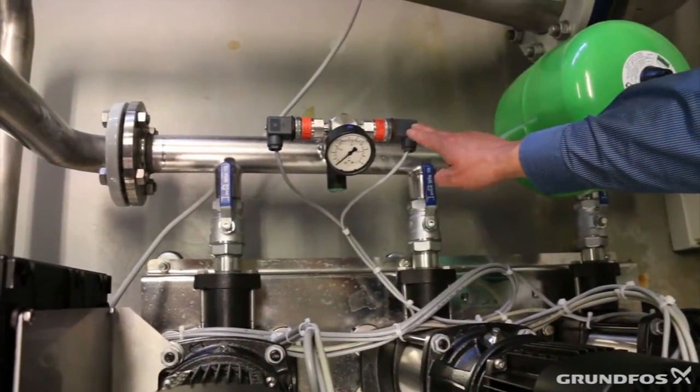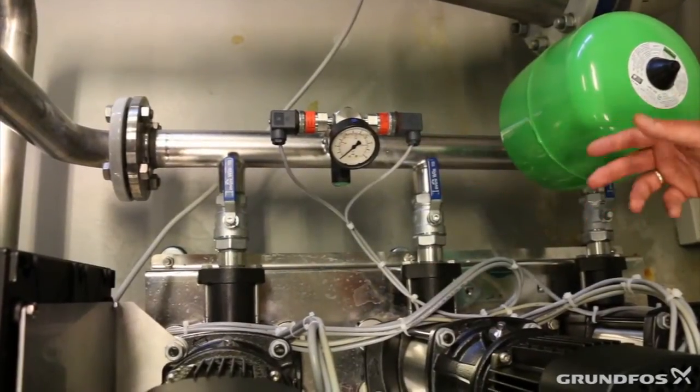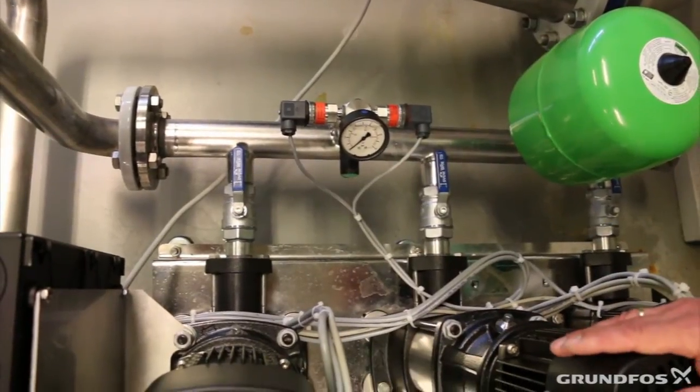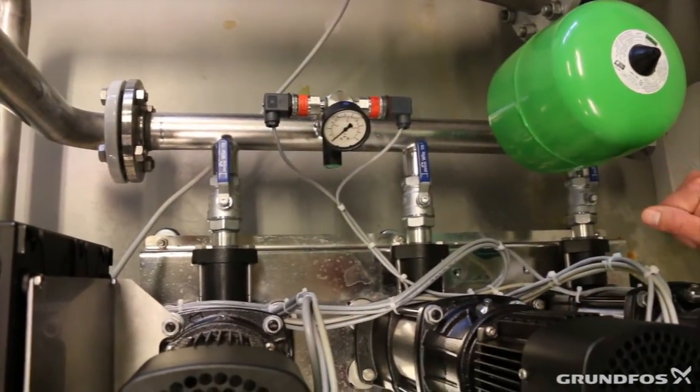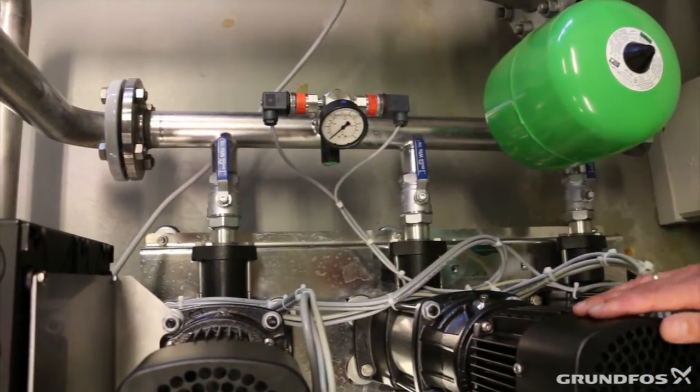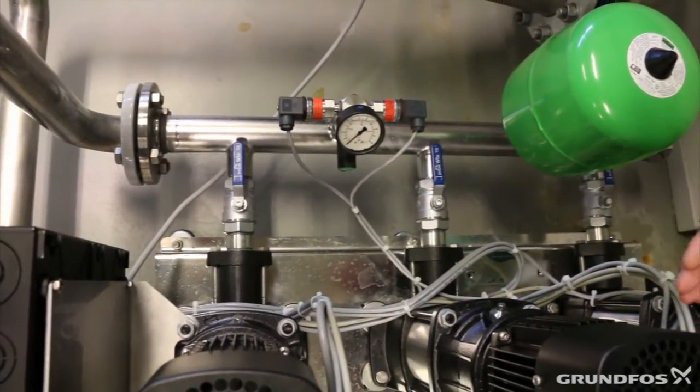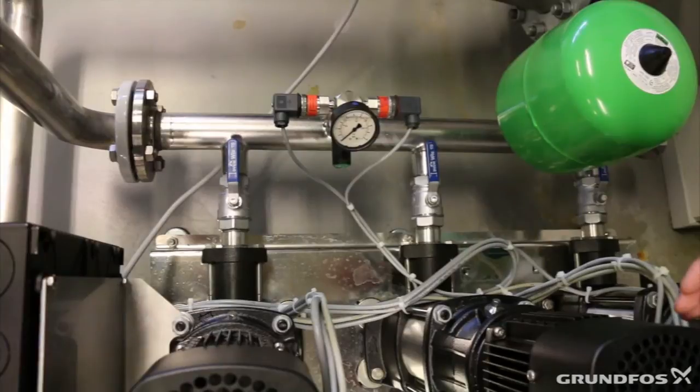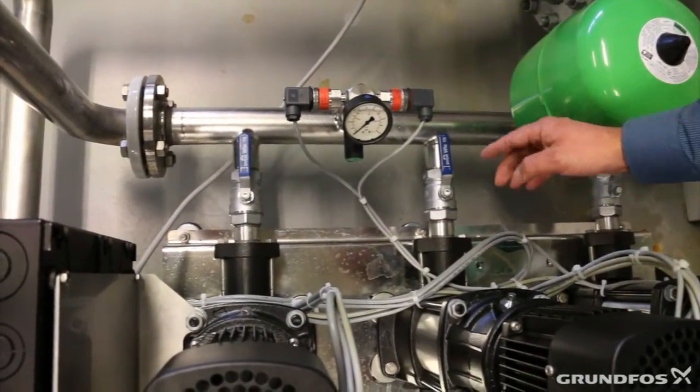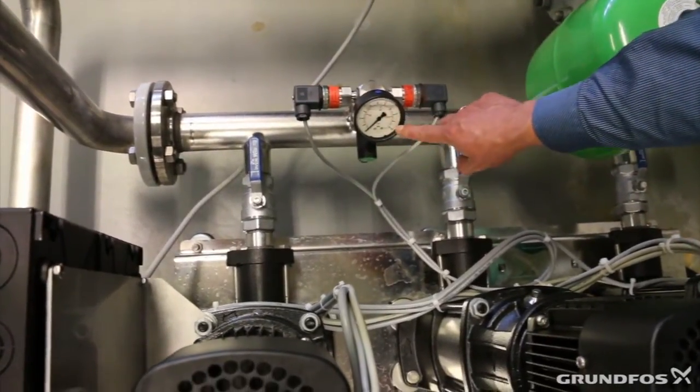What we also see here is two pressure sensors. These are used to transmit the actual pressure that we have to the pumps and the pumps will compare the measured pressure with the set point that we have. Depending on the difference, the pumps will go up in speed if the measured pressure is below the set point or will go down in speed if above. What we also see in this installation is a pressure gauge where we can read out the actual pressure.